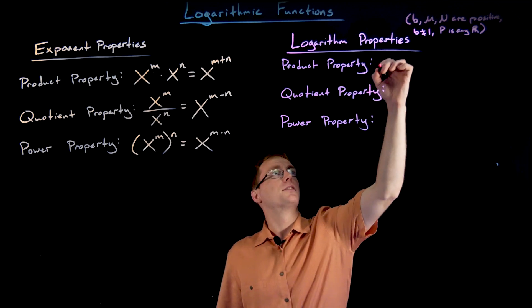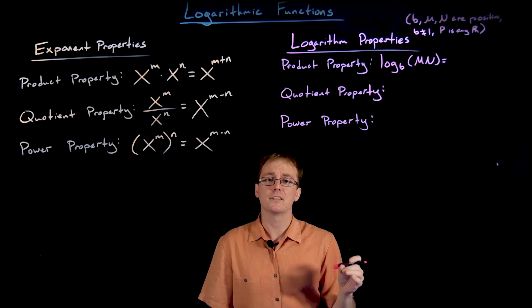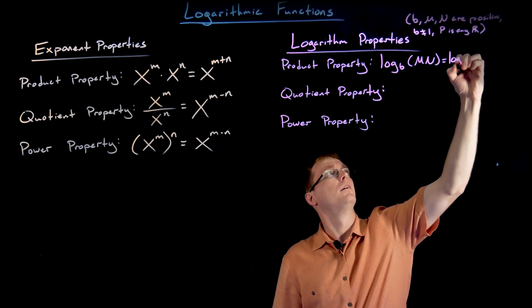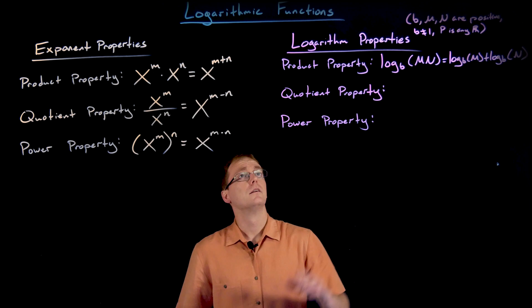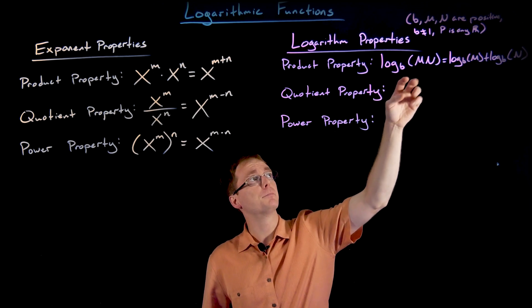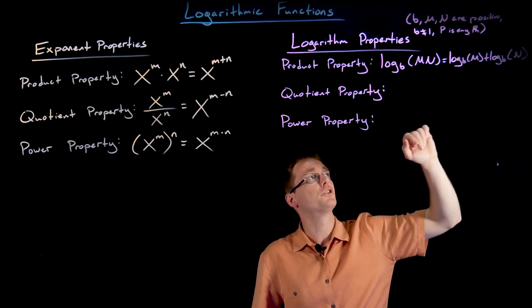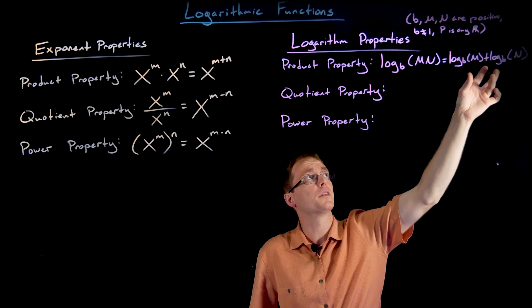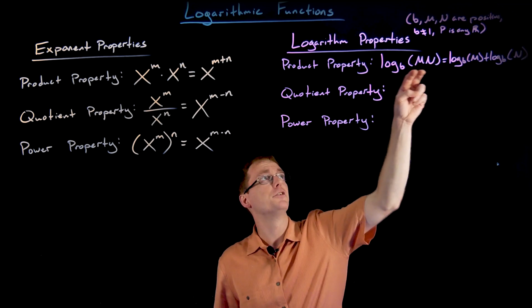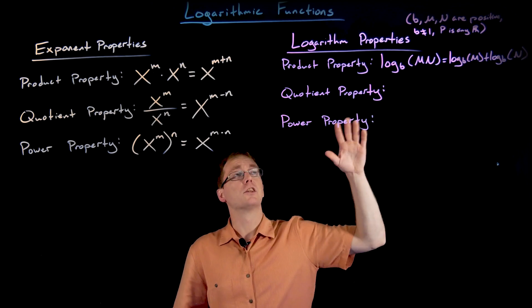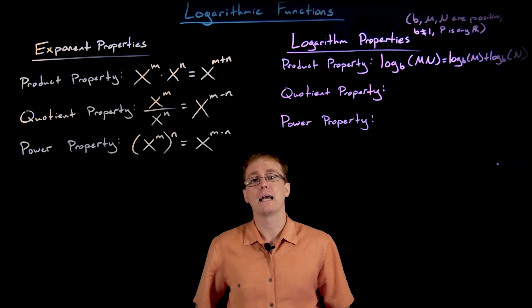The product property for logarithms says that if we have log base b of a product of two numbers M times N, we can break this up as the sum of two logarithms: log base b of M plus log base b of N. It also works in the opposite direction — if we have the sum of two logarithms with a common base, we can combine them into a single logarithm by multiplying their inputs together. We'll prove all these logarithmic properties after writing them down, and we'll see they come directly from the exponent product property and the inverse relationship between exponentials and logarithms.